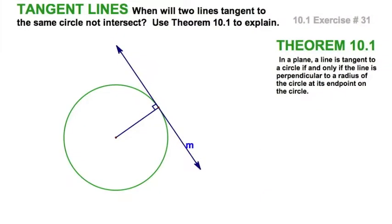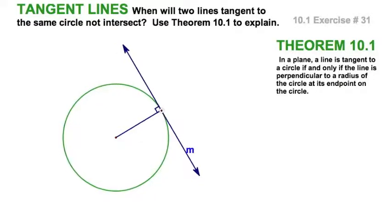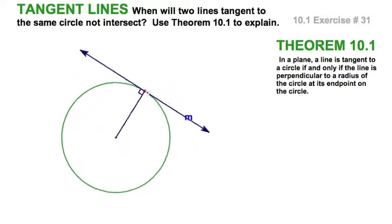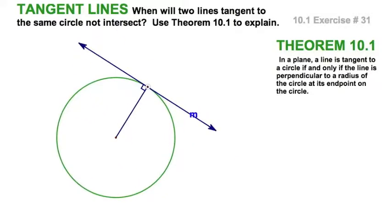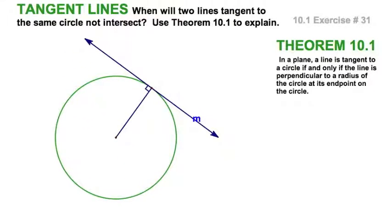Well, let's see if I can have two tangent lines to this circle and have them not meet. Right here, I'm demonstrating theorem 10.1. To say it the easiest way, this tangent line is perpendicular to the radius at the point of tangency. I've heard that enough.